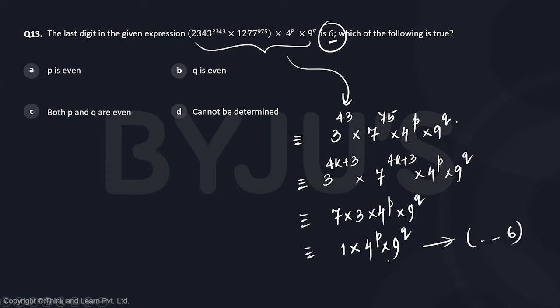Now, whether it is going to be 6 or something else, it all depends on 4 and 9. 4 to the power odd results in 4, and 4 to the power even always results in 6.